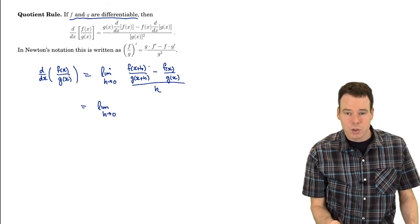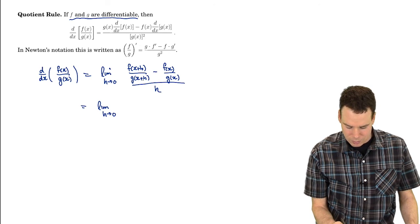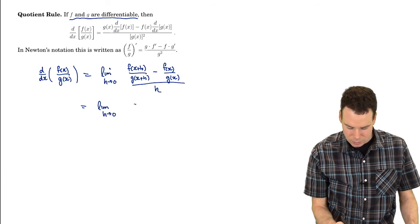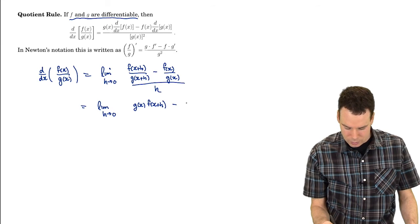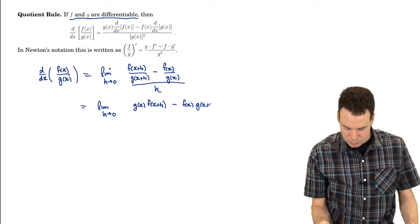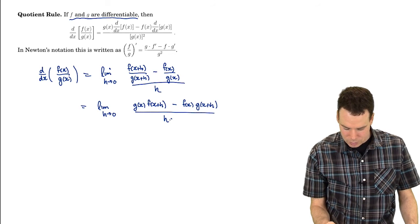Before I do that I'm going to start to simplify this expression. Put everything over a common denominator. So my common denominator is g of x plus h times g of x. This becomes g of x f of x plus h minus f of x g of x, g of x plus h. That's over our common denominator of h times g of x times g of x plus h.